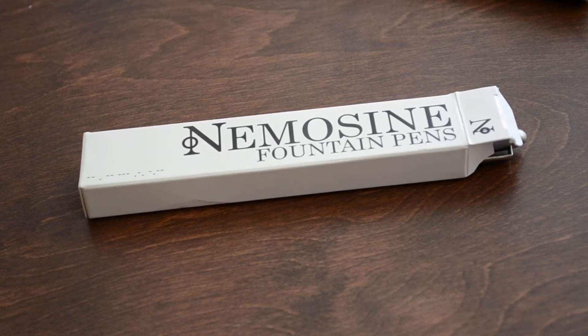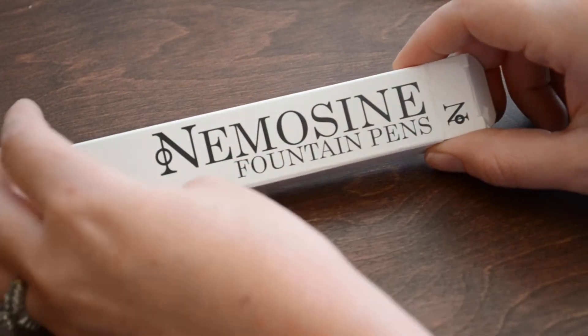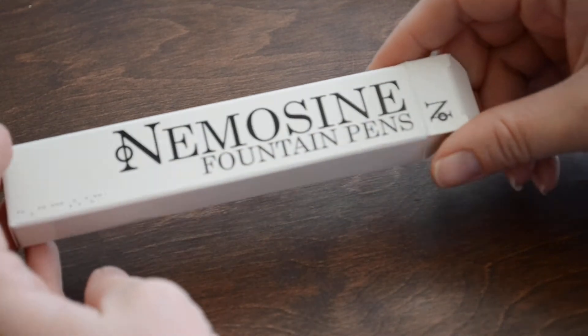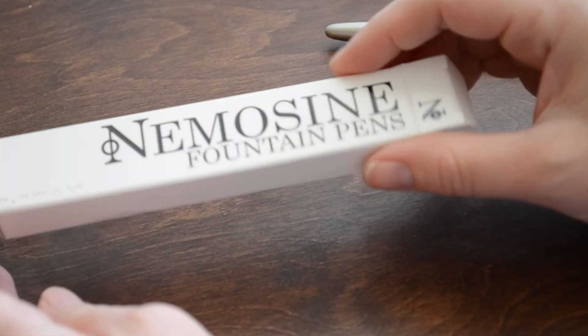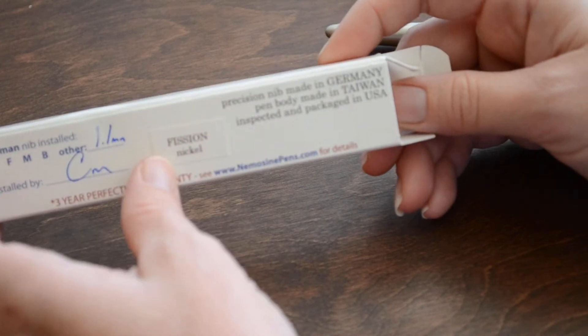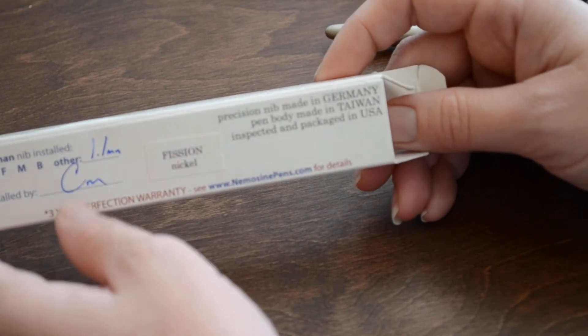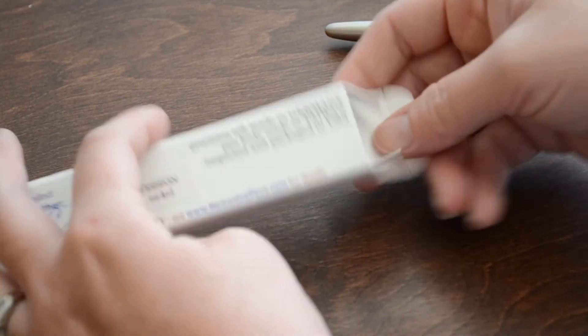Today we're going to take a look at the Mnemosyne Neutrino fountain pen. It comes in this very simple box here, which I appreciate because I'm not one to save boxes, and when I do, they tend to take up a lot of space. So it's marked fission, even though it's not, but it is a 1.1 millimeter nib, which I will show you in a minute.